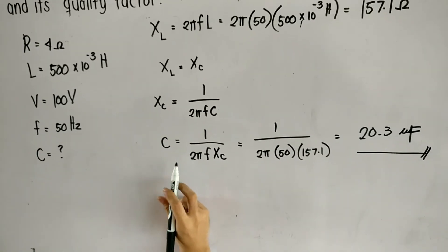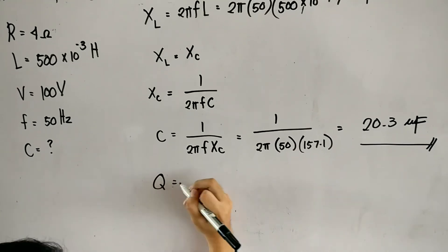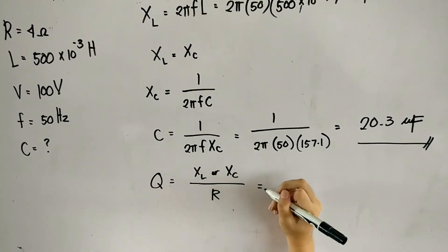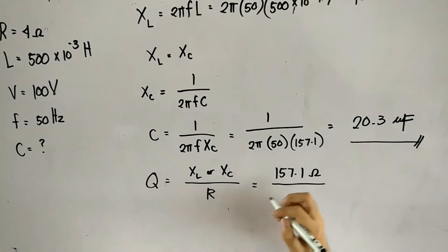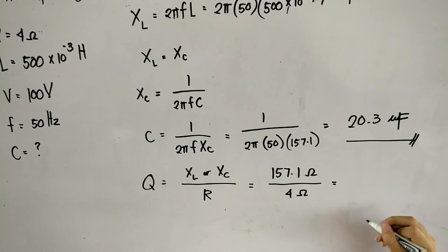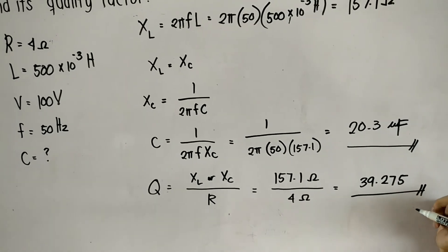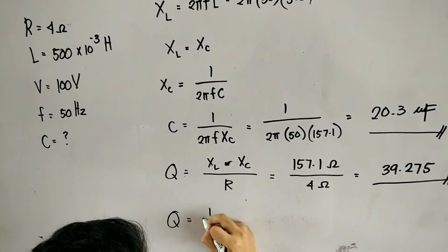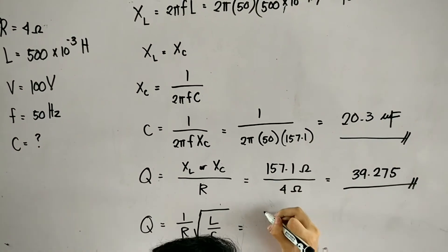Now that we have XL and XC, we can get the quality factor of the circuit. Quality factor is equal to XL or XC over R. Since both of them are equal, we use 157.1 divided by R, which is 4 ohms. So the quality factor of the given circuit is approximately 39.3. We can also get the quality factor using the other formula, which is 1 over R times the square root of L over C, and the answer is still the same.